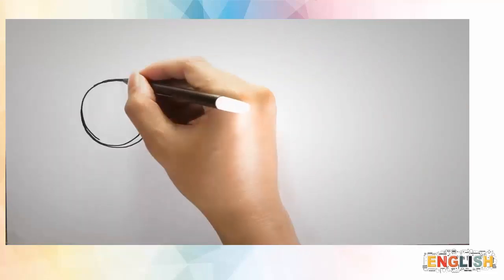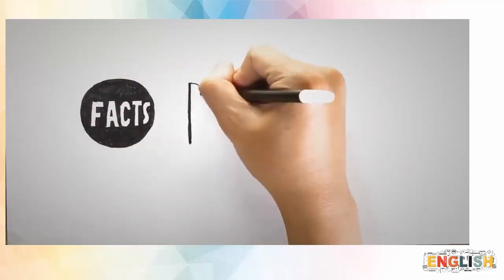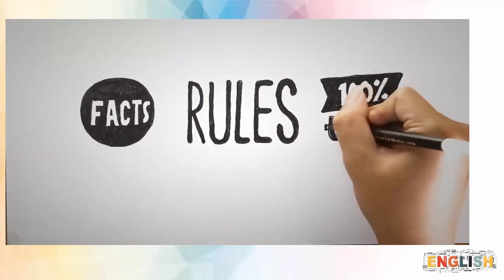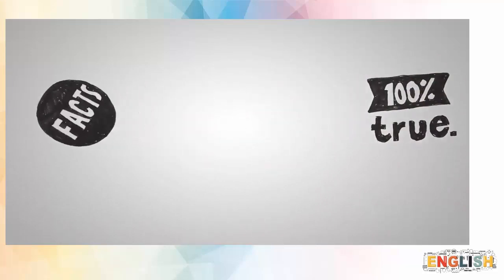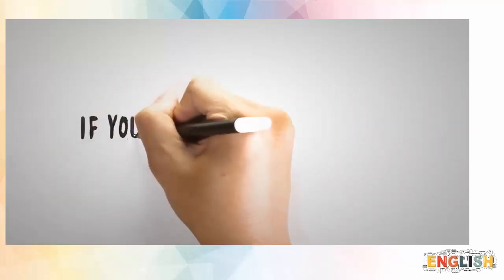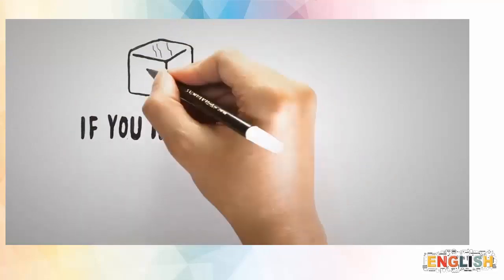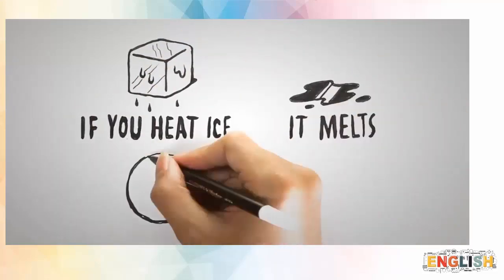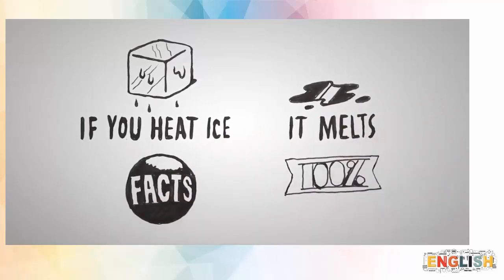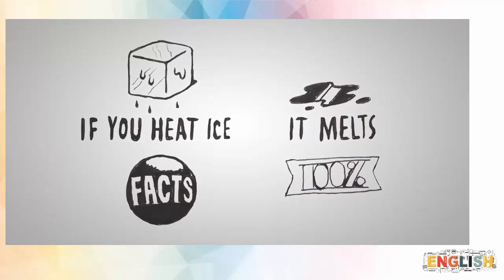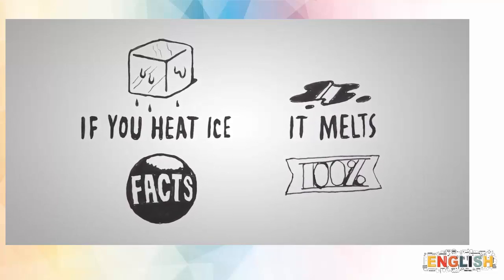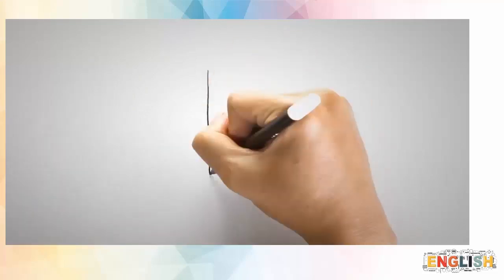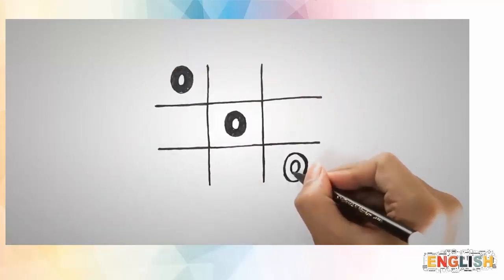What is zero conditional used for? You use zero conditionals to express facts, rules, and things that are 100% true. For example, check out this sentence: 'If you heat ice, it melts.' Is this a scientific fact? Will the effect happen 100% if the cause happens? Then this is a zero conditional sentence.